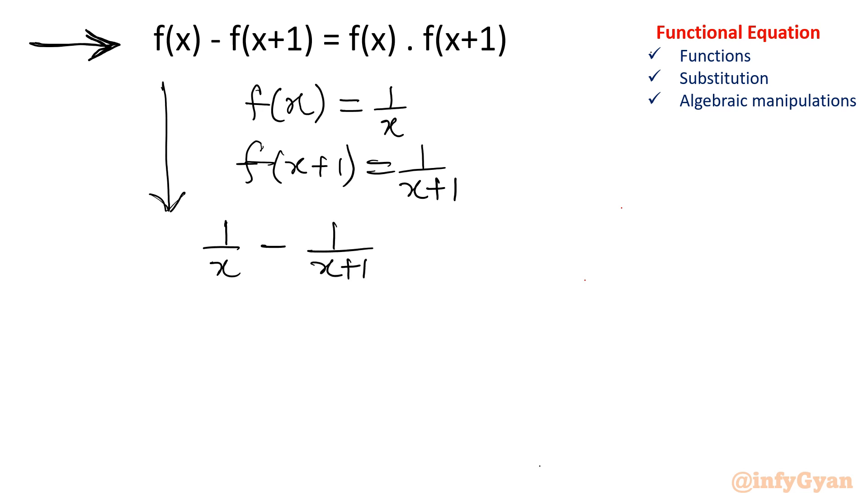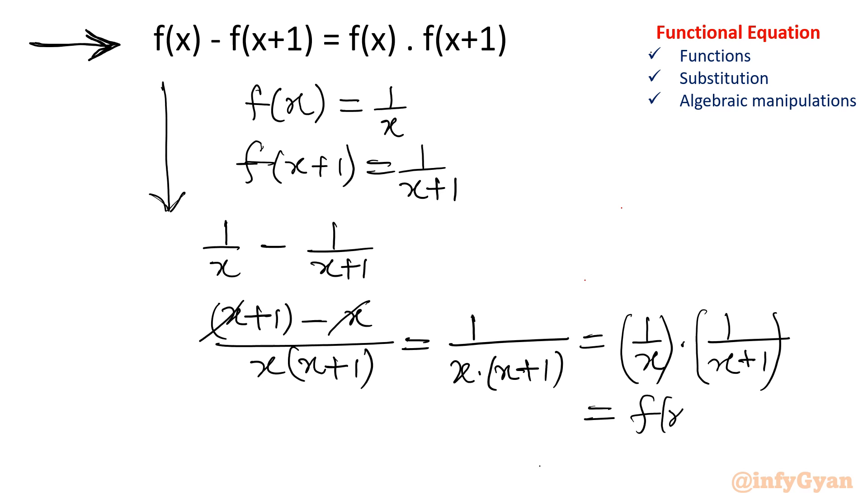So if I will simplify it, x plus 1 minus x over x into x plus 1. Now you can see this term will get cancelled out. So what is left? 1 over x into x plus 1. Or you can write like this 1 over x times 1 over x plus 1. And what is 1 over x? That is fx. And what is 1 over x plus 1? That is f of x plus 1.